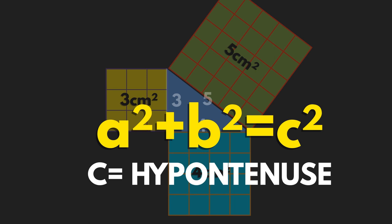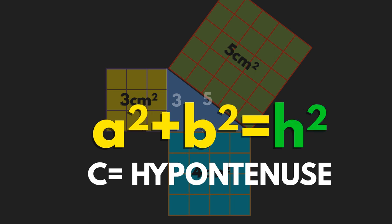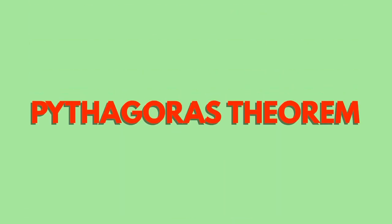So, sometimes the equation is written like this, a squared plus b squared equals h squared. This is known as Pythagoras' theorem.